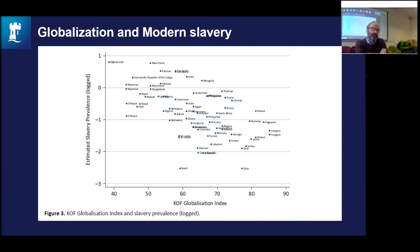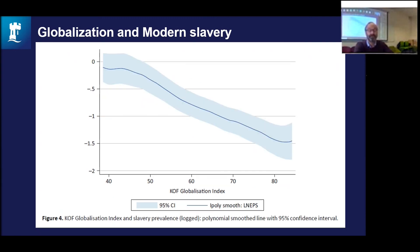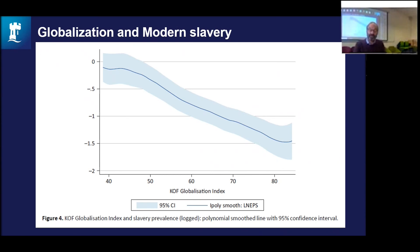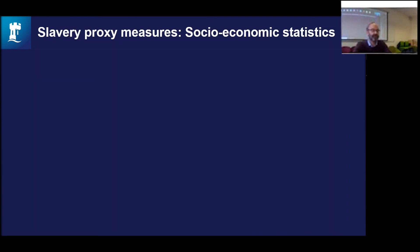Bernard Silverman and I used the Walk Free data for the 70 countries where surveys were conducted. We were interested in the relationship between measures of globalization — using a standard globalization measure — and we find that countries that are more globalized tend to have lower prevalence of slavery. That was in countries where surveys had been conducted, so we were relatively confident in those findings. A more stylized view shows the negative polynomial relationship: as the globalization index rises, there's a lower probability of slavery prevalence.